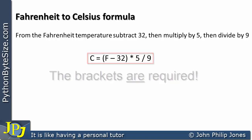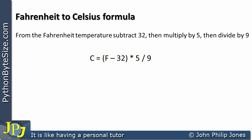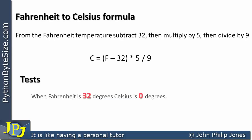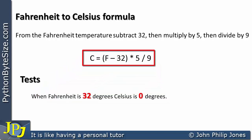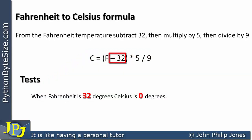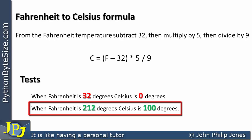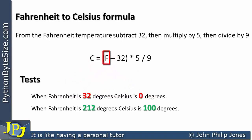Whenever you write a program, you usually produce a test plan to prove that the program is working correctly. Two test cases for this converter: when Fahrenheit is 32 degrees, Celsius is 0 degrees — substituting 32 into the formula gives (32-32)*5/9 = 0. When Fahrenheit is 212 degrees, Celsius is 100 degrees — 212 minus 32 is 180, multiplied by 5 gives 900, divided by 9 gives 100.